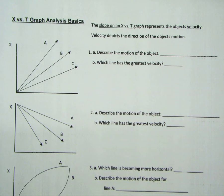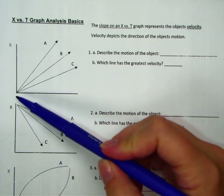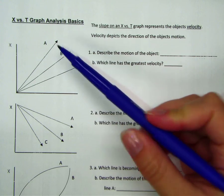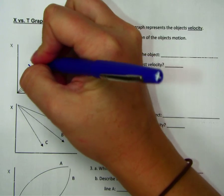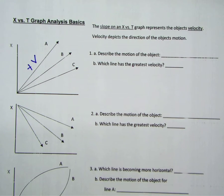Keep in mind that the direction of the object's motion is always determined by the slope, aka the velocity. So in this picture, if we have a positive slope, that means we have a positive velocity, which means the object is moving to the right or positive.